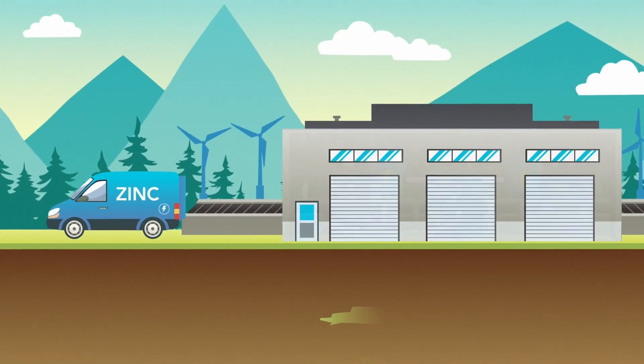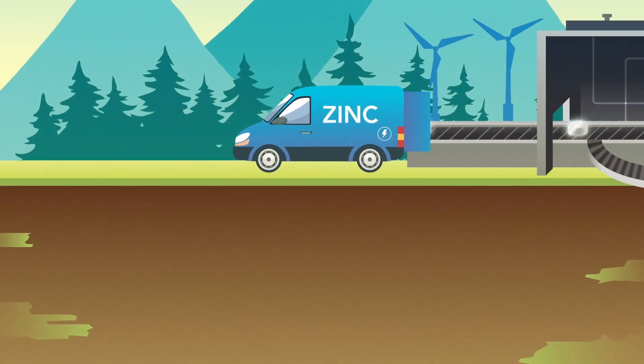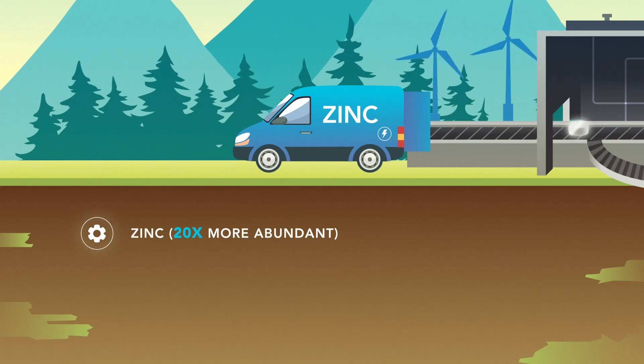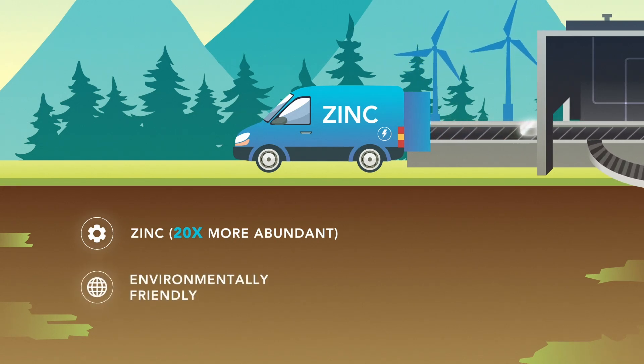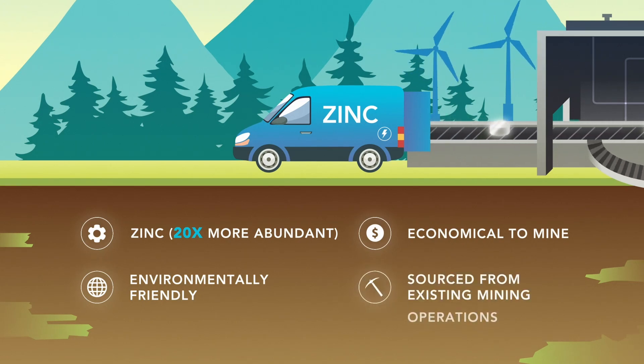Copper-67 is an ideal therapeutic radionuclide for radiopharmaceuticals. It is produced from the transition metal zinc, which is 20 times more abundantly available in the ground than Ytterbium, and significantly more environmentally friendly and economical to mine, making it easier to source from existing mining operations.